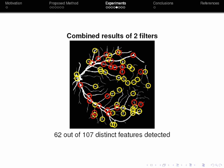Applying the new filter we are able to detect 40 new bifurcations. And when we combine the results the two filters detect more than half of the bifurcations. To be precise they detect 62 distinct features out of the 107 bifurcations.